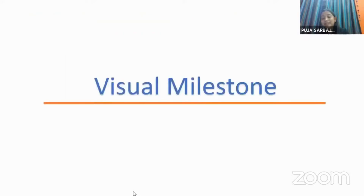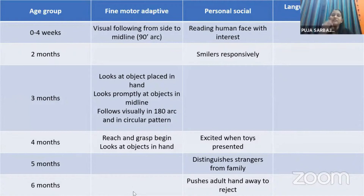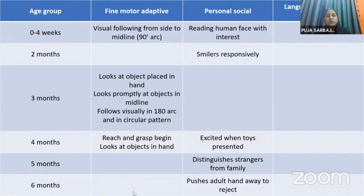Now, visual milestones. I'll divide them into fine motor adaptive, personal-social, and language. From zero to four weeks, a child follows from center — 90 degrees from midline — and shows interest in human faces. There is a well-known video called Liam's video showing a two-week-old baby imitating the mother's face held close — that behavior starts from zero to four weeks.